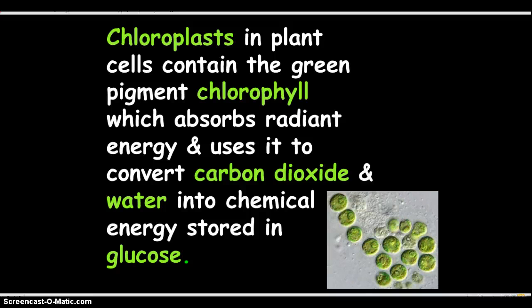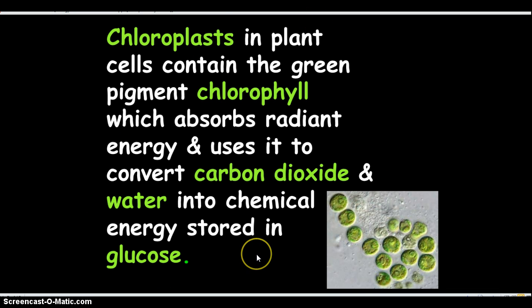Chloroplasts in plant cells contain the green pigment chlorophyll, which absorbs radiant energy and uses it to convert carbon dioxide and water into chemical energy stored in glucose. We've already studied chloroplasts and chlorophyll — that's part of the plant cells and that's where photosynthesis takes place. That's why we pre-taught it. This statement is very important to understanding photosynthesis.